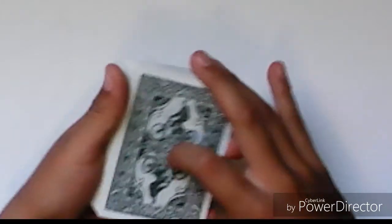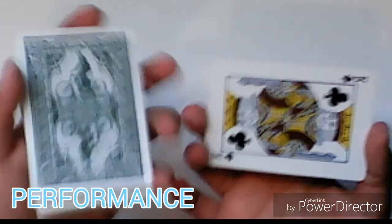So let's get on to the performance of this magic trick. Basically it looks something like this. You're going to grab the top card and in this case it's the king of clubs.